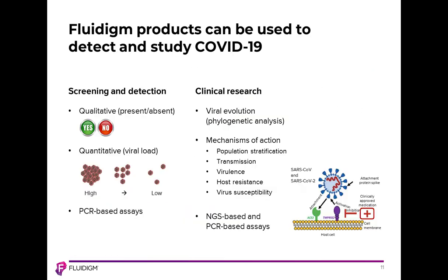Moving into how Fluidigm's products can help in the detection and study of COVID-19, we offer a variety of products on both the PCR side and the library prep side. On the screening and detection side, we're looking at a qualitative result — whether the virus is present or absent — and we can also look to see if a certain genotype is present. Then you can progress to a quantitative approach, more of a viral load approach, traditionally used with HIV or hepatitis C, to quantitate how much virus is present. These methods are all based on PCR assays.